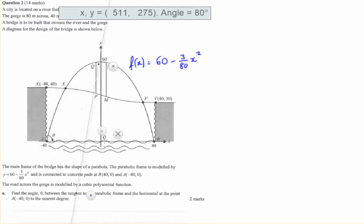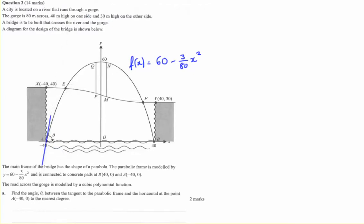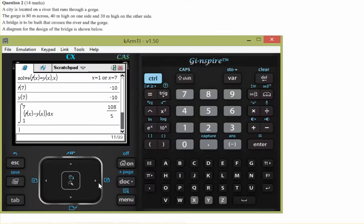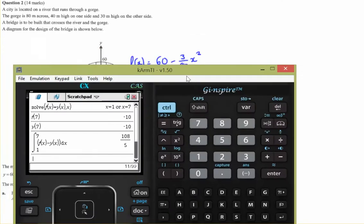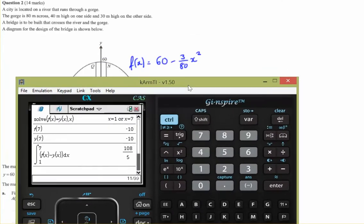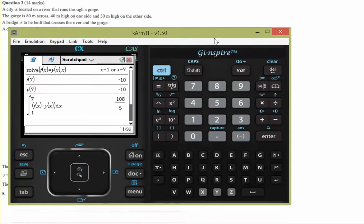There are two parts here: we need to find the tangent, then use trigonometry to solve for theta. Finding the tangent should be a single line of CAS working. We can define a function and then find the tangent.